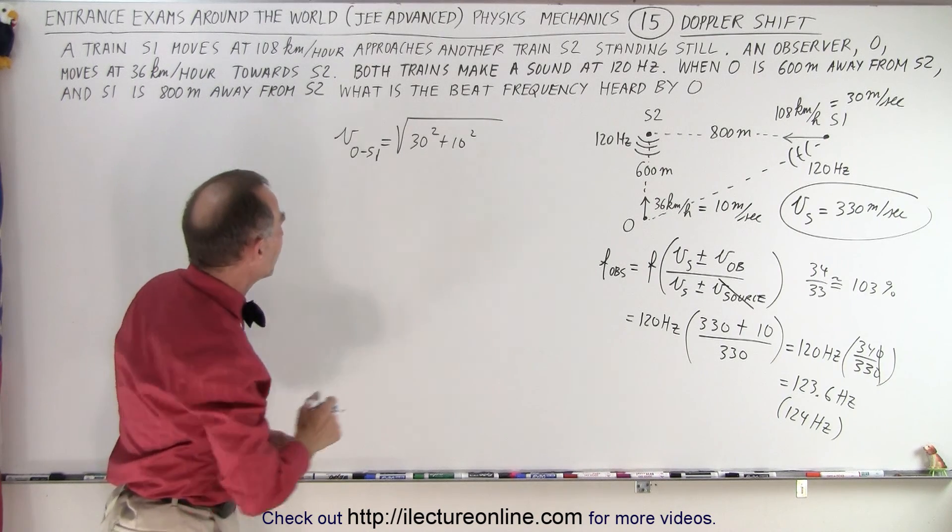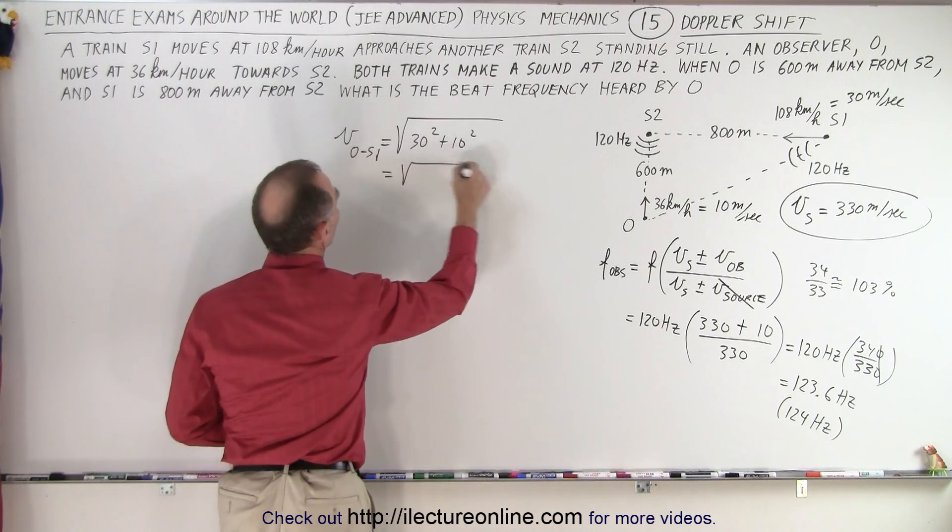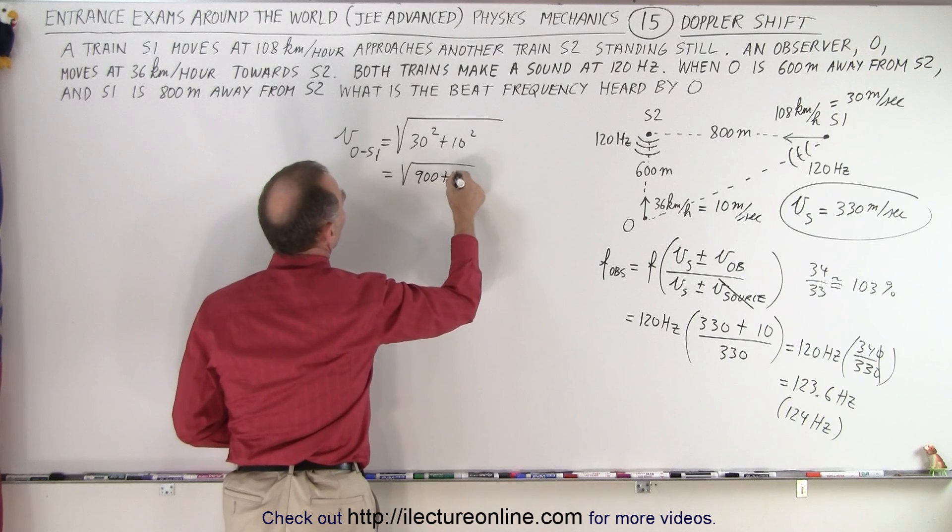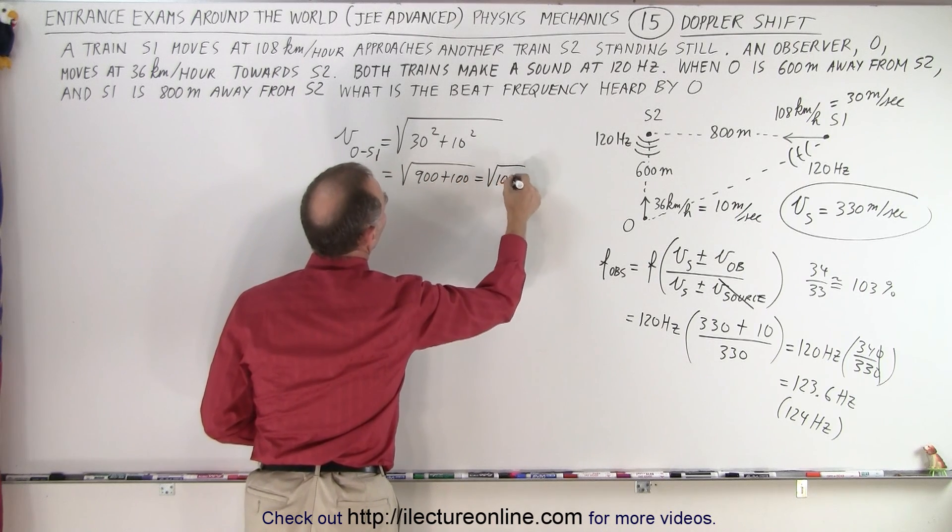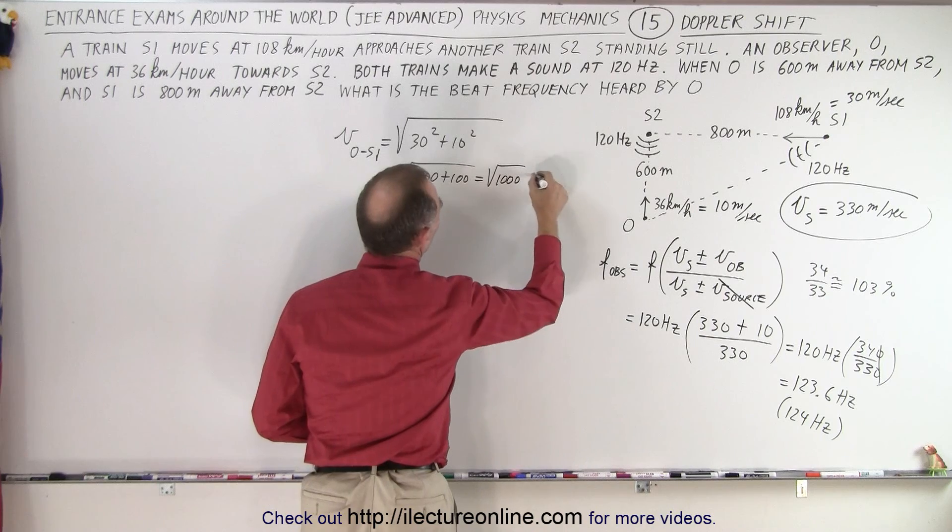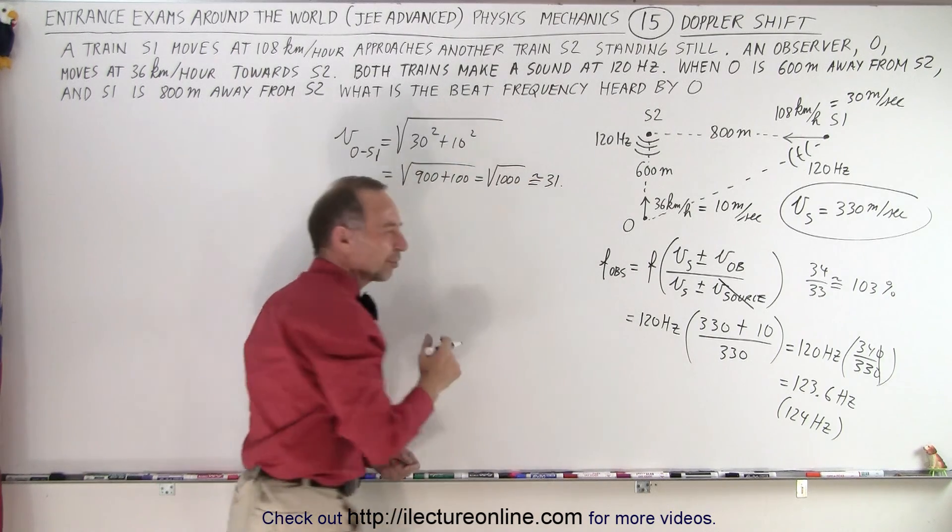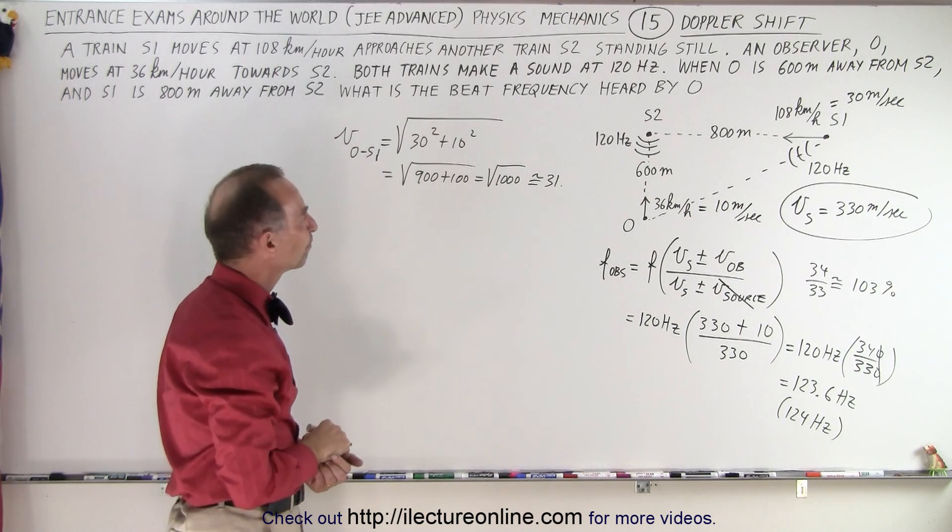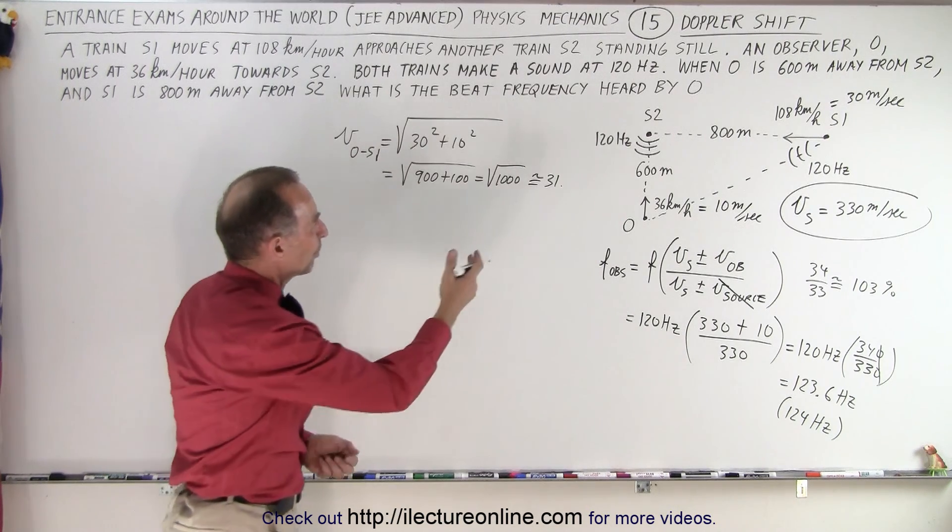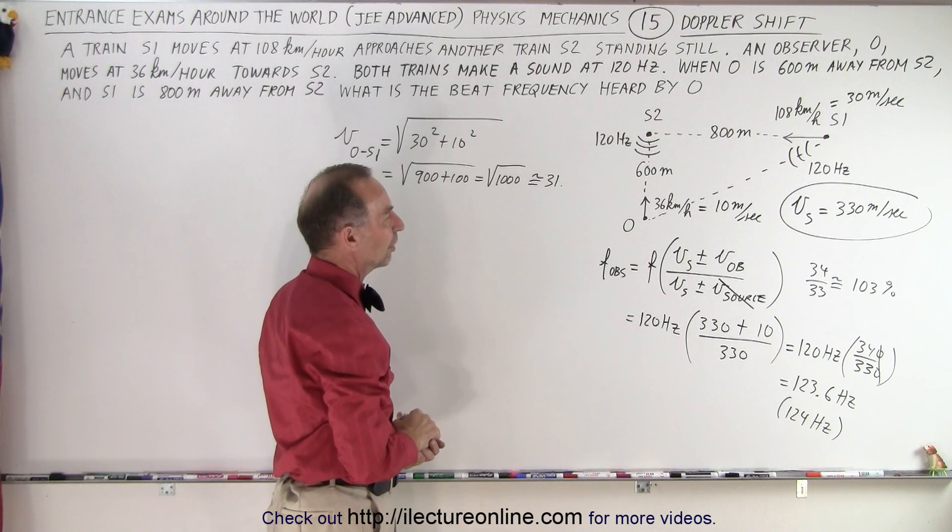So that's a quick and dirty way to do that. So this is equal to the square root of 900 plus 100, which is equal to the square root of 1,000, and the square root of 1,000 is approximately like 31.1 or 31.3 or something like that. So let's pick 31. Close enough.